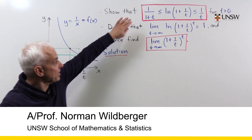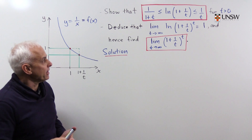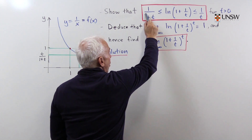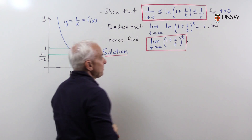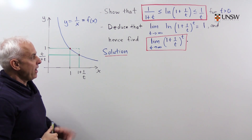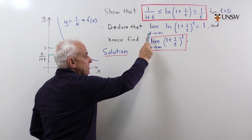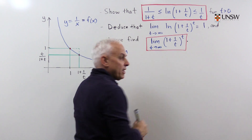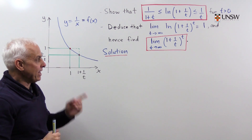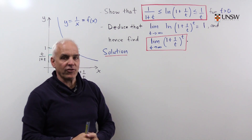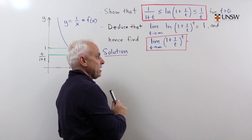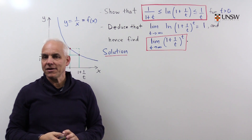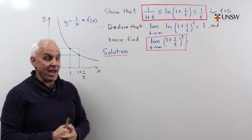In this problem we're going to establish an interesting inequality involving the log function — namely that log of 1 plus 1 over t is greater than or equal to 1 over 1 plus t, and less than or equal to 1 over t, for t greater than 0. From that we're going to deduce that the limit as t approaches infinity of log of 1 plus 1 over t to the t equals 1, and hence find the value of the limit as t approaches infinity of 1 plus 1 over t to the t. This turns out to have an interesting financial aspect to it.